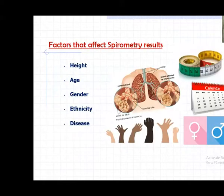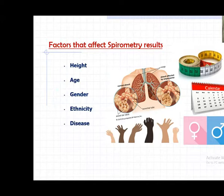The factors affecting predicted values: modern automatic machines calculate predicted lung volumes - you input height, age, and gender, and to some extent ethnicity. This helps determine the predicted lung volume for the person. Values 10% above or below the predicted value are accepted, but anything significantly lower indicates a problem. Predicted value depends upon height, age, gender, and ethnicity.